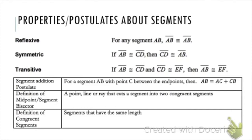The reflexive property is that a line segment equals itself. The symmetric property means if AB is congruent to CD, I can switch those and say CD is congruent to AB. The transitive property — put a star by this one because we're going to use it a lot — says if AB equals CD and EF equals CD, then AB must equal EF.